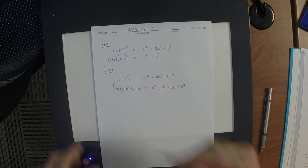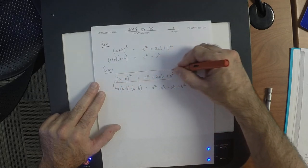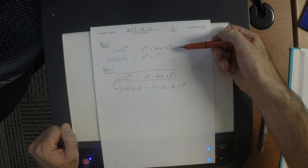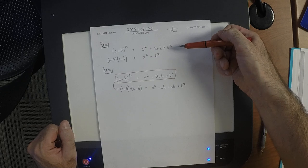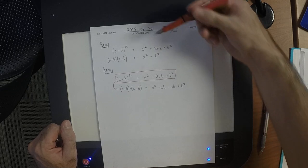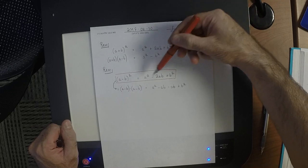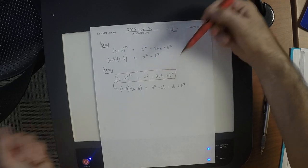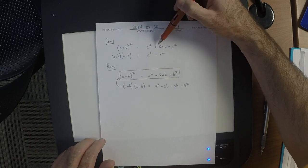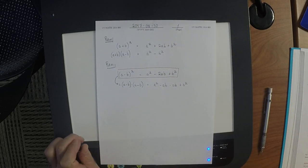Simplifying, we get a squared minus 2ab plus b squared. This is yet another formula to memorize. The only difference between (a + b)² and (a - b)² is that (a + b)² has a plus 2ab in the middle, while (a - b)² has a minus 2ab. Otherwise they're quite similar.